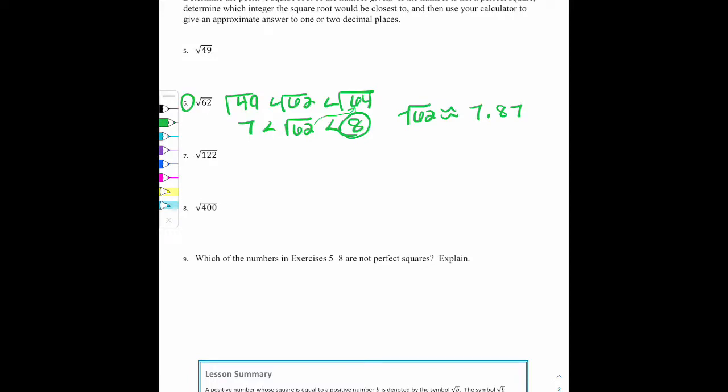So at this time, please pause the video and try the remaining exercises. And you can resume the video once you are comfortable and finished to check your answers. Okay, so you've had time to practice. Let's look at number 5. The square root of 49 is just 7. 7 times 7 is 49.